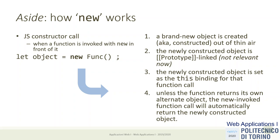We create an empty object, assign it to 'this', and inside the constructor we set new properties on it. If there's no explicit return statement, the constructor automatically returns this newly created object. If you return something explicitly, the return value will be that other object, but that's seldom used. The general rule is: by default the constructor returns the specific object that was just constructed.